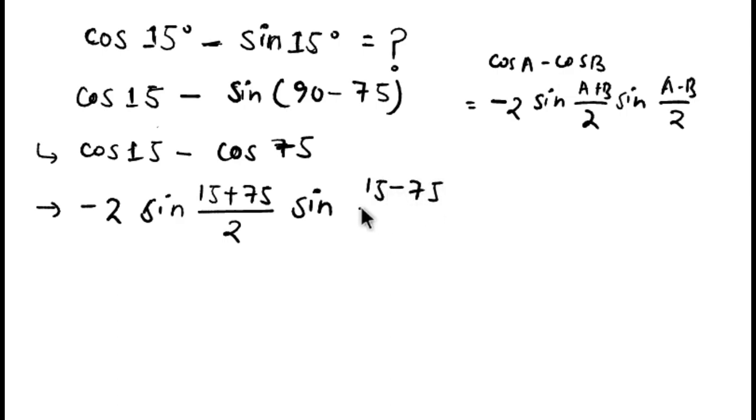Solving further, we got -2 sin 45° times sin(-30°). Sin(15+75) is 90, and 90/2 is 45, so it is sin 45°. And 15 minus 75 is -60, and -60 divided by 2 is -30°.